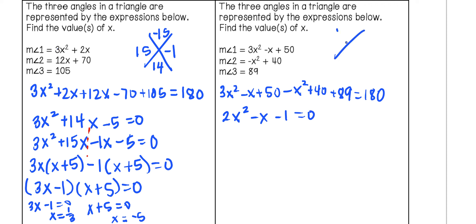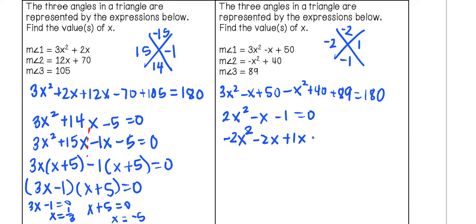We're looking for factors of negative 2 (from 2 times negative 1) that add to negative 1. That's negative 2 and positive 1. We rewrite the trinomial as 2x squared minus 2x plus 1x minus 1 equals 0.